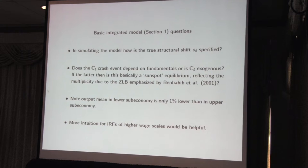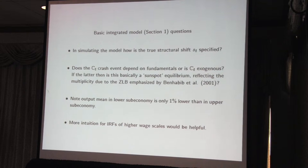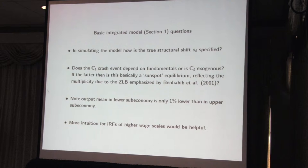This is a question about how the model was solved. In Part 1, there are actually two different steady states in the model that are perfect foresight steady states — one at the zero lower bound, one not. So it could be that it's purely an exogenous process, effectively a sunspot equilibrium. The output mean in the lower sub-economy in the paper is only about 1 percent below, which tells you that fluctuations between the upper and lower sub-economy from normal random draws are not giving you the depression — it's really the exogenous shocks themselves.